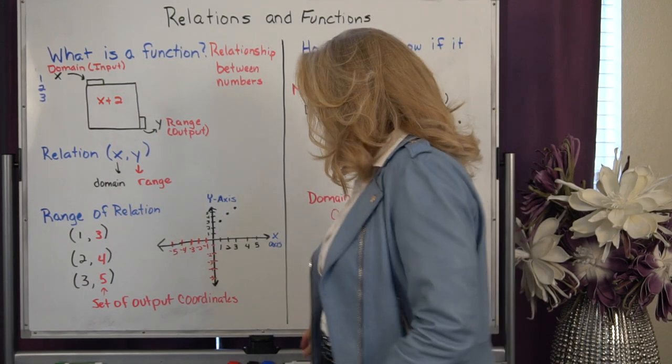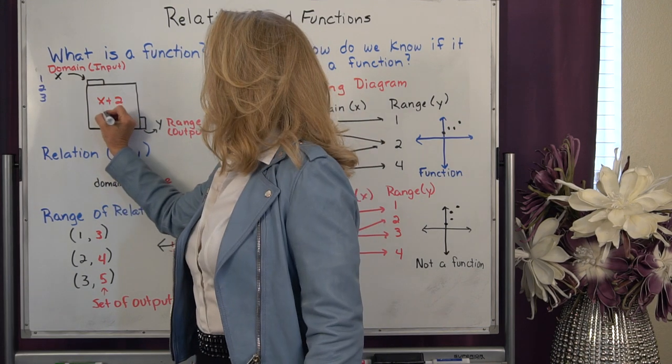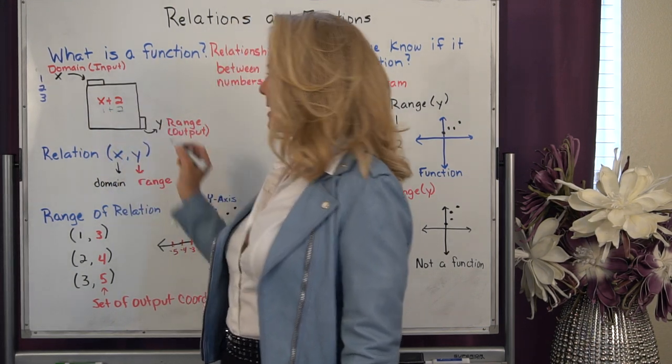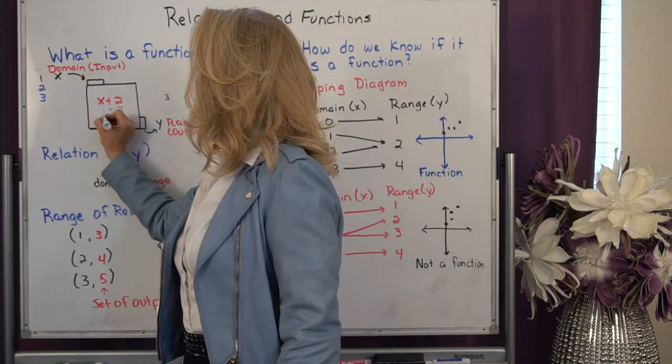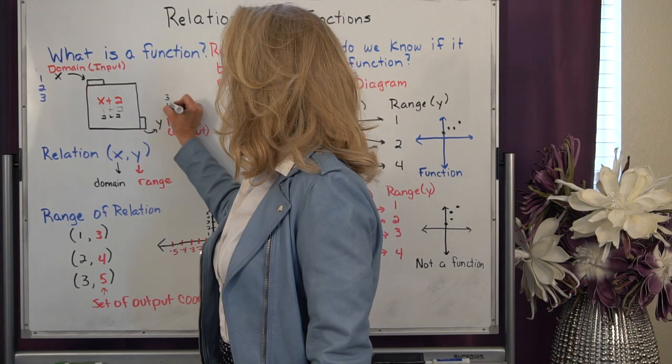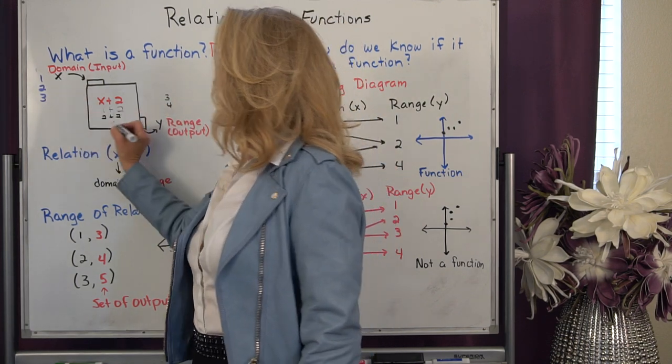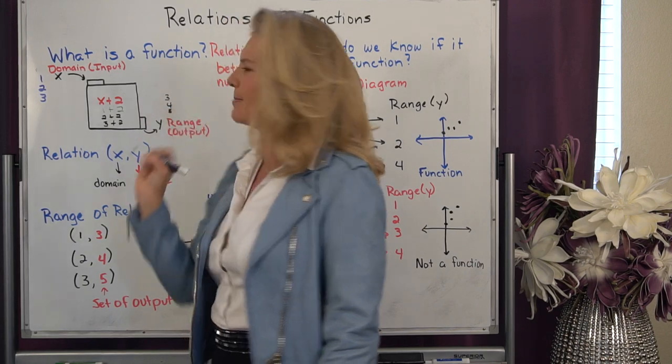So let's take an example. What if we inputted one and we do one plus two, what comes out? Well, three. If we input two, two plus two, what pops out? Four. And if we input three, three plus two, what pops out is five.